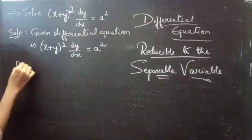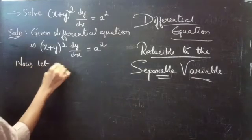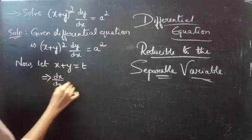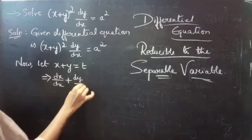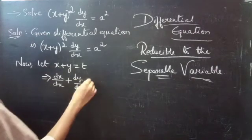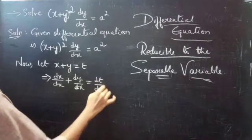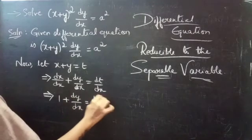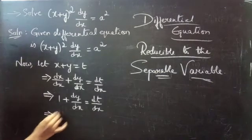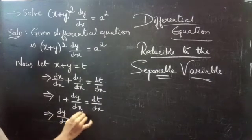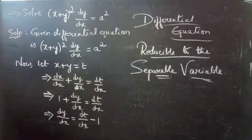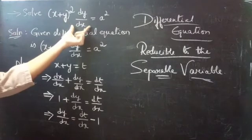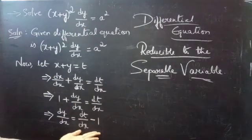Solution by using substitution. The given differential equation is (x + y)² · dy/dx = a². Now let x + y = t. We will differentiate both sides with respect to x. We get dx/dx + dy/dx = dt/dx, which becomes 1 + dy/dx = dt/dx. From this we get dy/dx = dt/dx − 1.